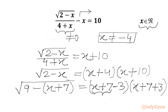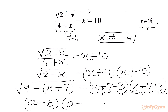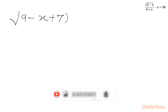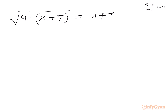You can see x plus 7 appears repeatedly. We consider (x plus 7) as a and 3 as b. Then the RHS is (a minus b) times (a plus b), so we apply the identity: (a minus b)(a plus b) equals a squared minus b squared. We write the equation as square root of (9 minus (x plus 7)) equals (x plus 7) squared minus 3 squared.